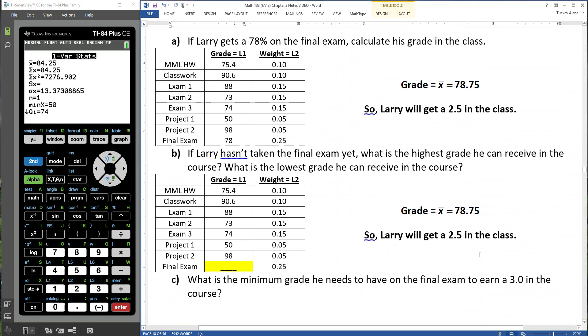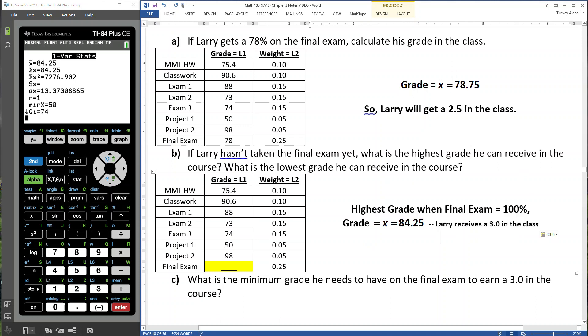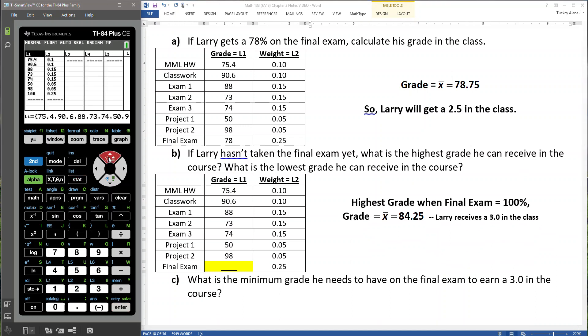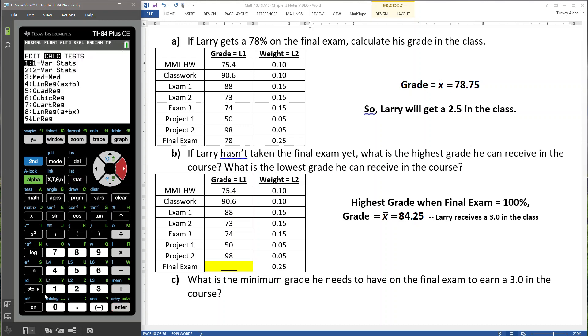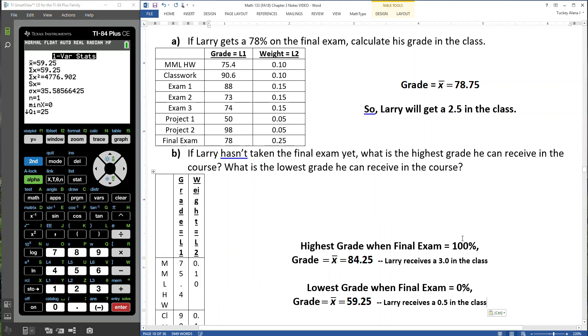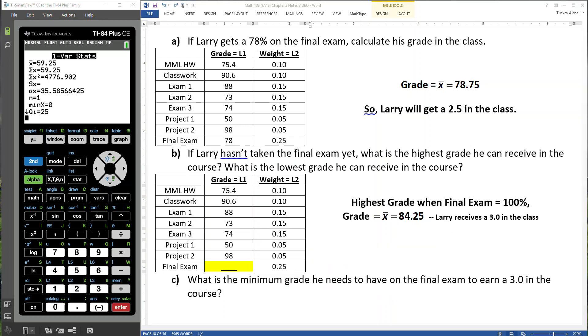Alright, now what about the lowest grade in the class? We'll go back in and change that 100 to a 0. Right? And see what happens. So go to Stat, Edit, go up, 0, Enter, and then redo it. And that's a 59.25, which is a 0.5 in the class. Which, by the way, is not passing. That's never a good sign. So if you'd like to pass the class, getting a 0 on the final will not help. Hold on, I've got to type this up one second.